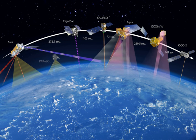A weather satellite is a type of satellite that is primarily used to monitor the weather and climate of the Earth. These meteorological satellites, however, see more than clouds and cloud systems. City lights, fires, effects of pollution, auroras, sand and dust storms, snow cover, ice mapping, boundaries of ocean currents, energy flows, etc., are other types of environmental information collected using weather satellites.